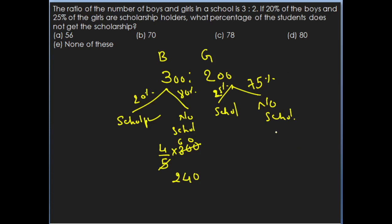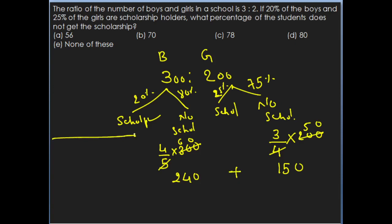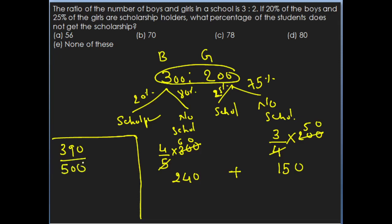In girls, 75% do not hold scholarship. 75% in terms of fraction is 3/4. So 3/4 of 200 equals 150. Therefore 240 boys and 150 girls do not hold scholarship. The total students who do not get scholarship is 240 plus 150 which is 390. Out of total 500 students, 390 do not get scholarship. So 390 out of 500 — the percentage is 78%. Therefore 78% of the students do not get scholarship.